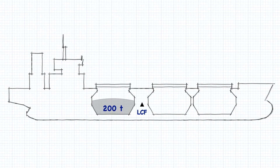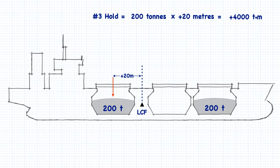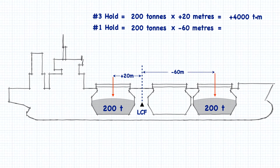Now if we were to load 200 tons of cargo into the number 3 hold, the force applied would be 200 tons and the length of the lever is 20 meters from the pivot point at the center of flotation. The trimming moment would equal 4,000 ton-meters. If we were to then load another 200 tons of cargo into the number 1 cargo hold, the force applied is 200 tons and the length of the lever is negative 60 meters, resulting in a trimming moment of negative 12,000 ton-meters. It's the same amount of cargo, but it's further away from the center of flotation, and so the trimming moment is much larger.